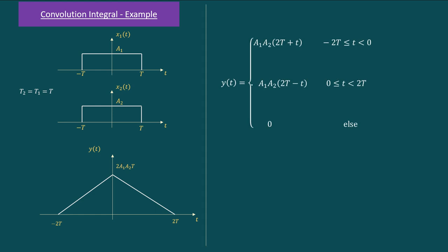When t1 = t2 = t, the equations simplify: t1 + t2 = 2t. The width runs from −2t to +2t. The rising slope equation becomes a1·a2·(2t + t) and the falling slope becomes a1·a2·(2t − t). In this way we can evaluate the convolution of two rectangular signals of the same width as well as of different widths.